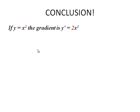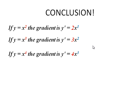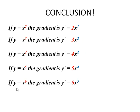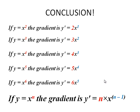Conclusion. If Y equals X squared, the gradient is 2 times X to the 1. If Y equals X cubed, the gradient is 3 times X to the 2. If Y equals X to the 4, the gradient is 4 times X to the 3. When Y equals X to the 5, the gradient is 5 times X to the 4. If Y equals X to the 6, the gradient is 6X to the 5. And in general, if Y equals X to the N, the gradient is N times X to the N minus 1.